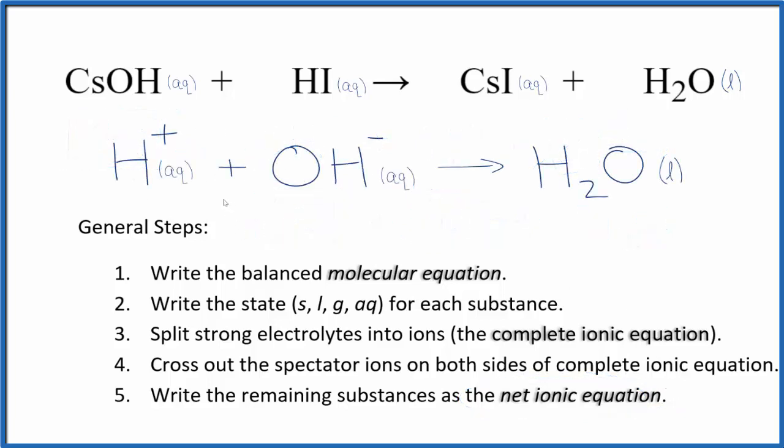So this is the balanced net ionic equation for cesium hydroxide plus hydroiodic acid. You'll note that charge is balanced—we have a plus and a minus, giving us a net charge of zero in the reactants. Products are neutral, net charge of zero, and the atoms are balanced as well.